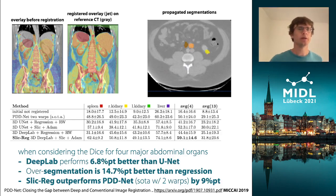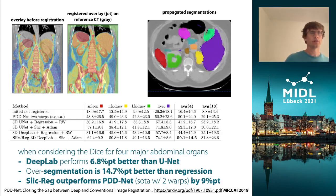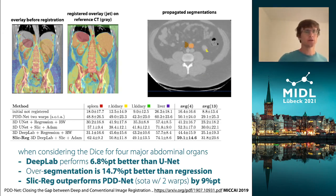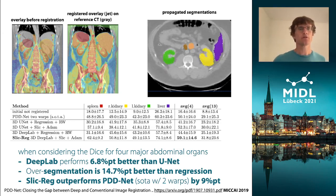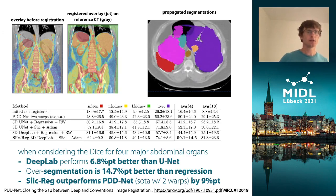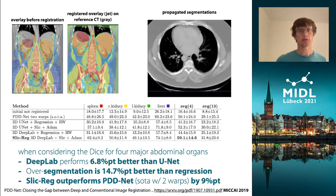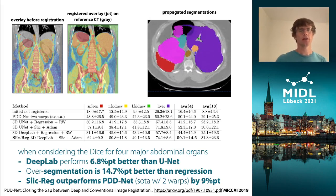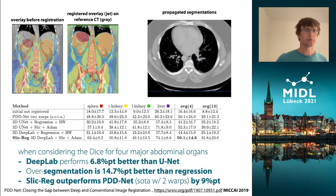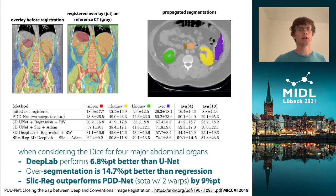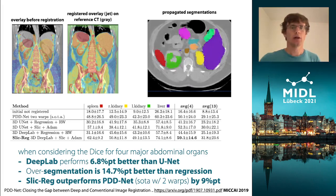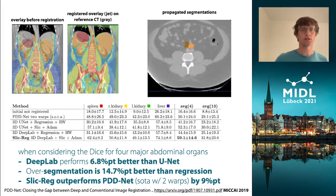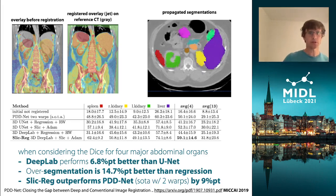The detailed numbers are in the table and in the paper. To highlight key results: when we swap out the UNet with our DeepLab, we increased accuracy by about seven percentage points. Crucially, our supervoxel-based oversegmentation — this quite new approach to registration — is 15 percentage points better than a straightforward regression. SLICK also outperforms PDDNet, which obtained state-of-the-art performance in the recent LearnDirect challenge, by about nine percentage points.